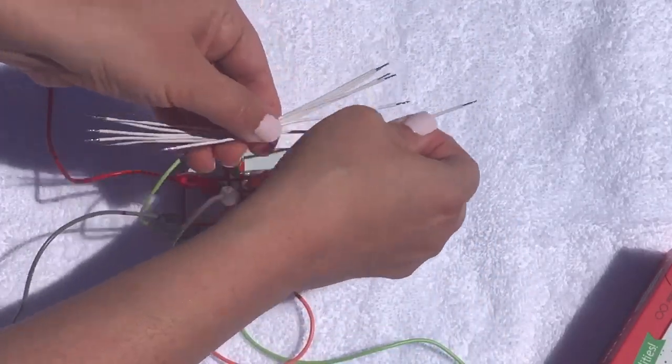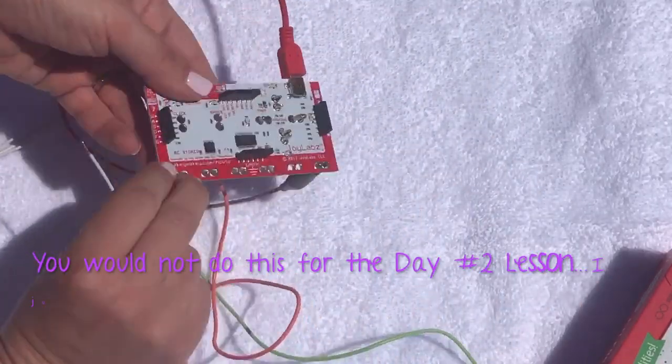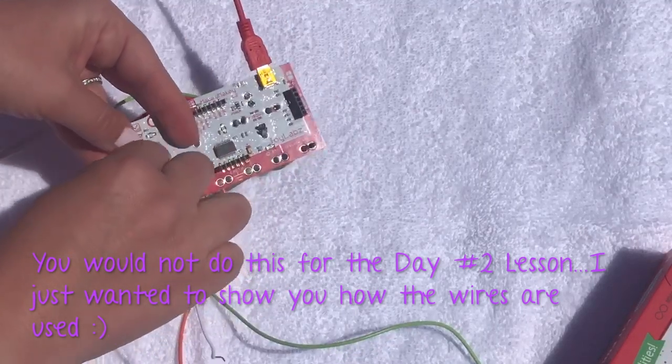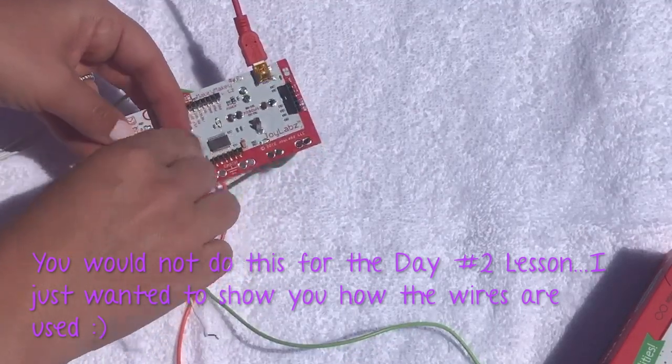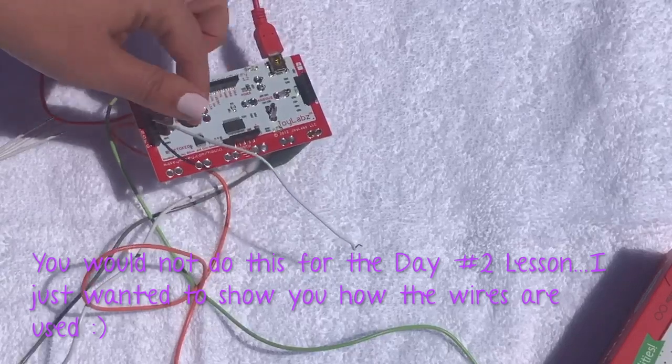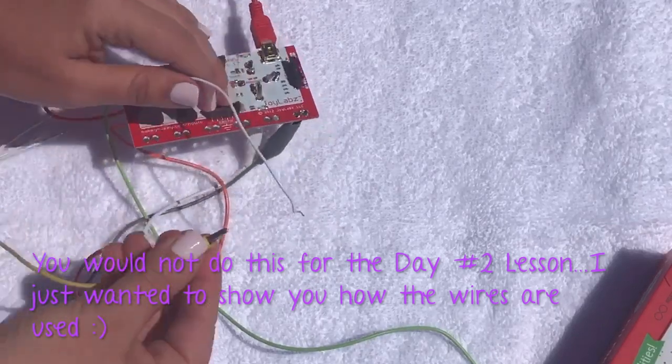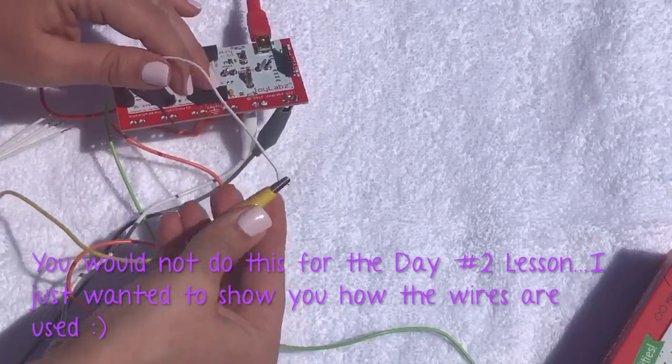I want to show you what you use the little wires for. If you flip it over, there are these little holes that correspond with letters on the keyboard. I just put it into hole A, and then I can take an alligator clip and attach it to the other end.